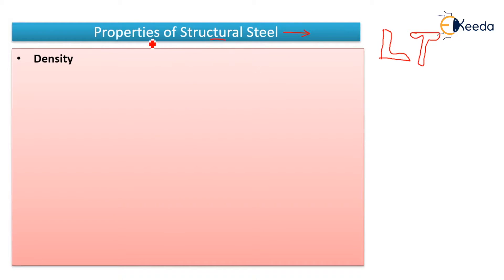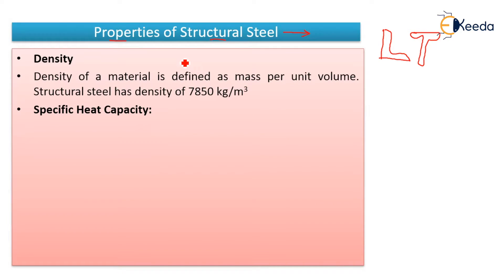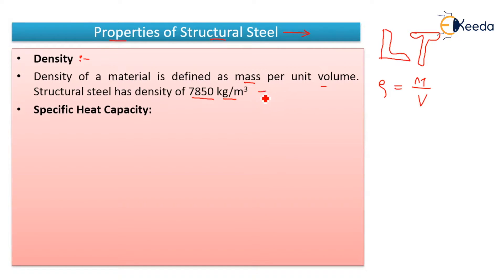Now we will see the properties of that steel. The first property of structural steel is density. Density is mass per unit volume. The density of steel or structural steel is 7850 kg per meter cube. If you want to convert it into kilonewton per meter cube, then it will be 78.5 kilonewton per meter cube. Remember this: 7850 kg per meter cube or 78.5 kN per meter cube.